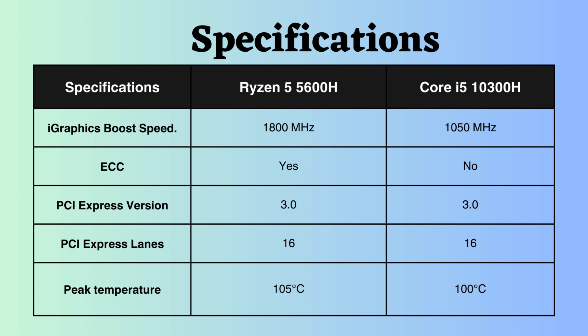Both processors can withstand peak temperatures of up to 100 degrees Celsius. The TDP of the Ryzen is configurable, while the TDP of the Intel is not. The TDP of the Ryzen processor ranges from 35 to 54 watts, whereas the TDP of the Intel 10300H is 45 watts. Opt for the configurable TDP if you prioritize battery life and portability.